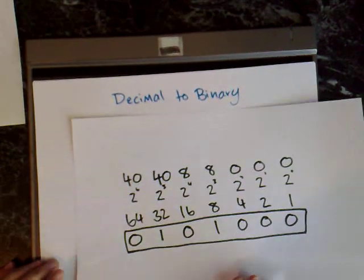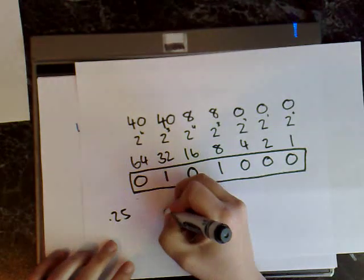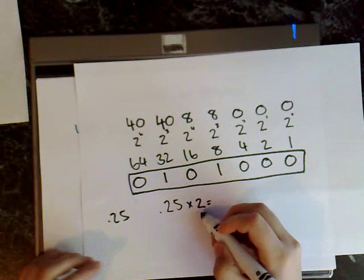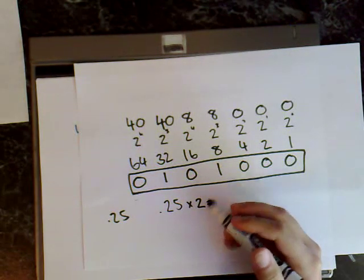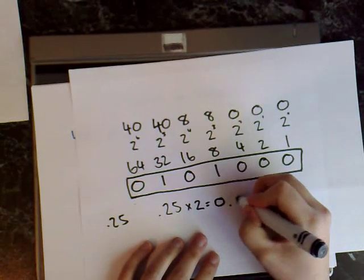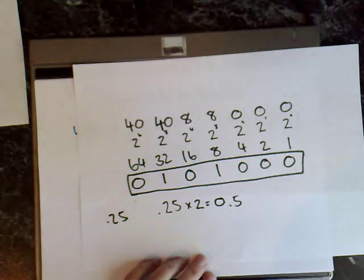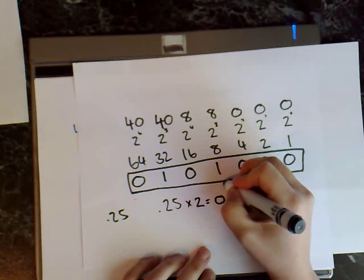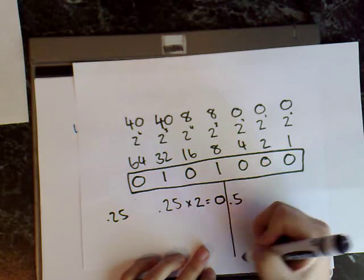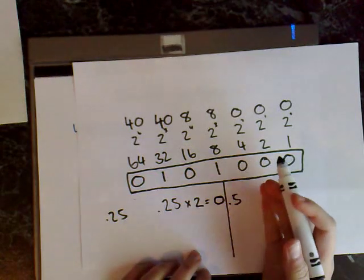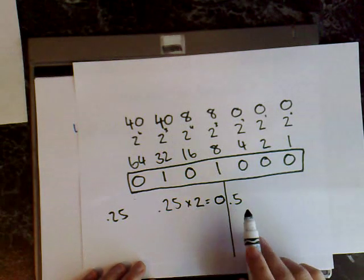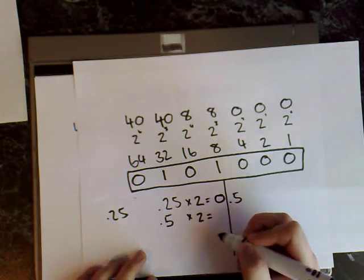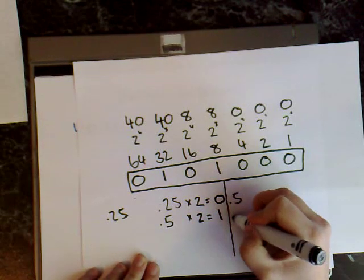The next step is to do the fractional part, which is 0.25. We do it the same way: 0.25 multiplied by 2 — remember we use 2 because binary is base 2 — equals 0.5. In this case, unlike the other two examples, we have got a fractional part. So you draw a line to the left of the decimal point, take what is on the right and carry it across: 0.5 multiplied by 2 equals 1.